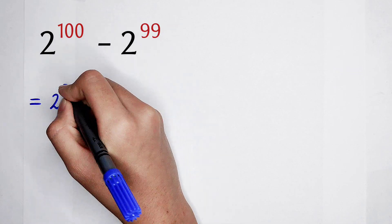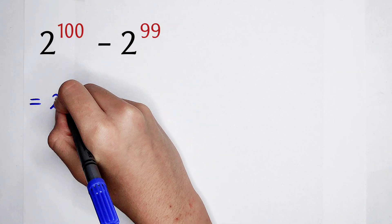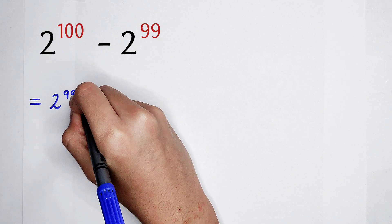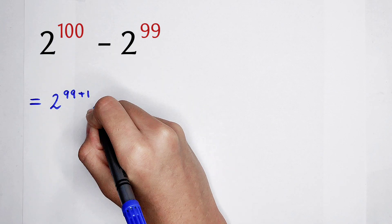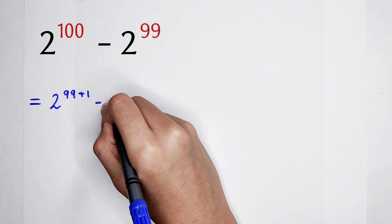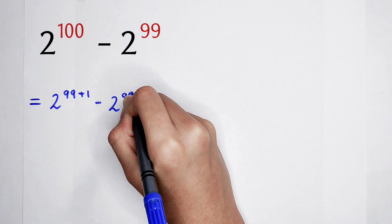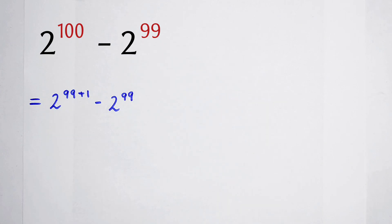So, 2 to the power of 100 is 2 to the power of 99 plus 1, and then minus 2 to the power of 99. And then, what should we do?